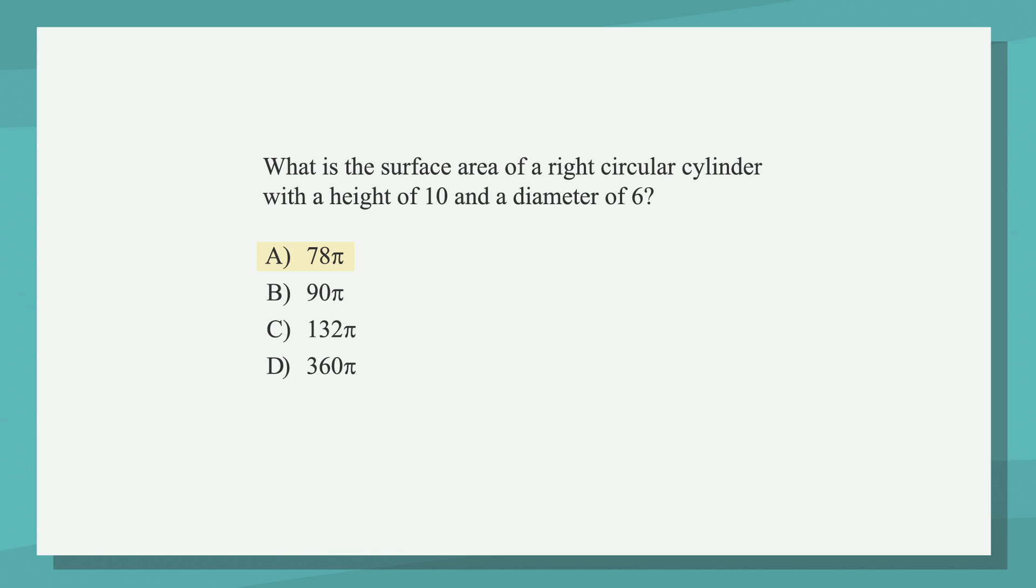What is the surface area of a right circular cylinder with a height of 10 and a diameter of 6? The answer choices are a, 78 pi, b, 90 pi, c, 132 pi, and d, 360 pi. We haven't talked about the surface area of a cylinder yet, but let's see if you can figure it out. Use all the information we talked about in this lesson, and you should be in good shape.